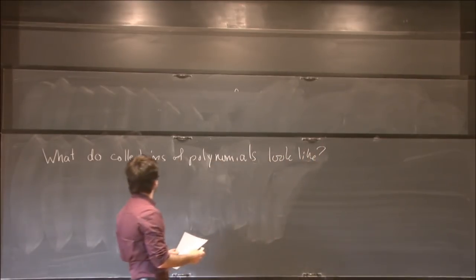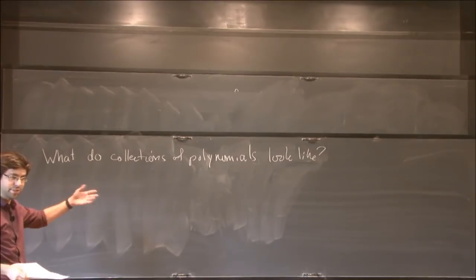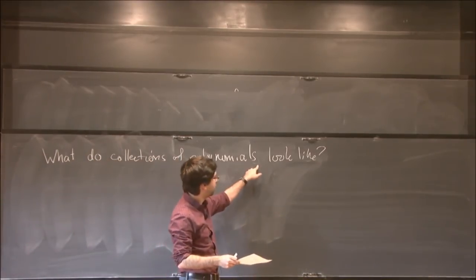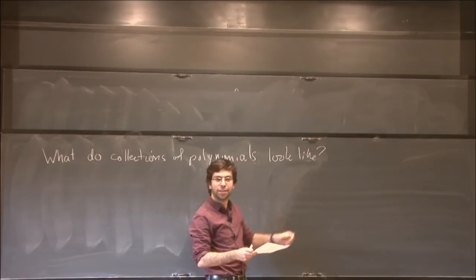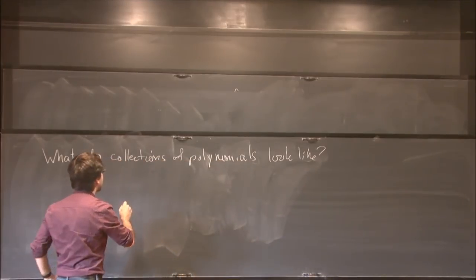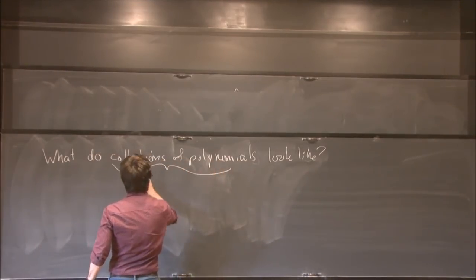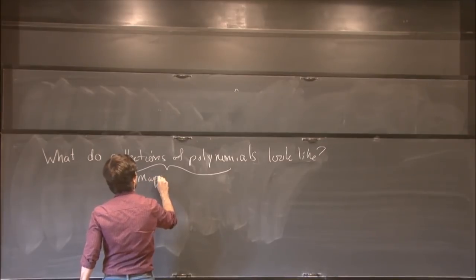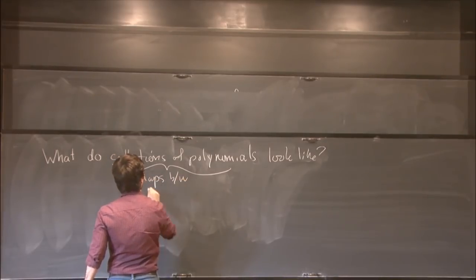There's two things I should make precise to talk about this question. First of all, what do I mean by collections of polynomials, and then what do I mean by look-like? For this talk, collections of polynomials is going to be maps between algebraic varieties.